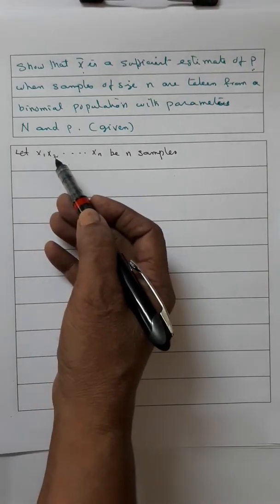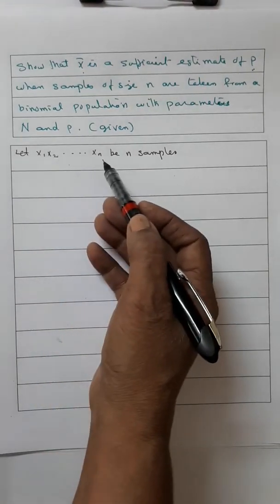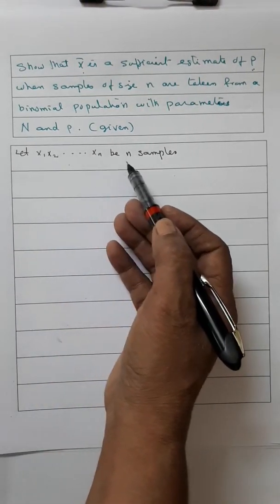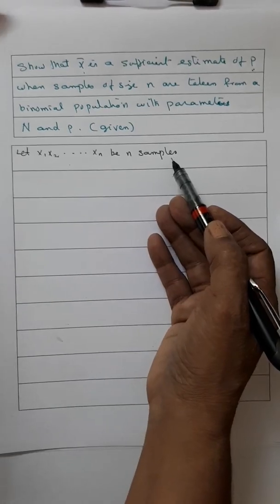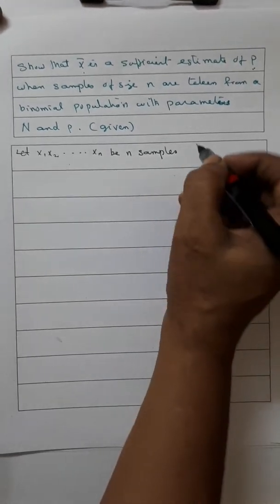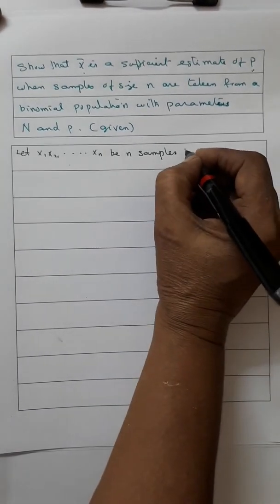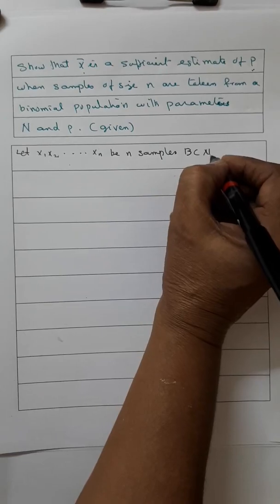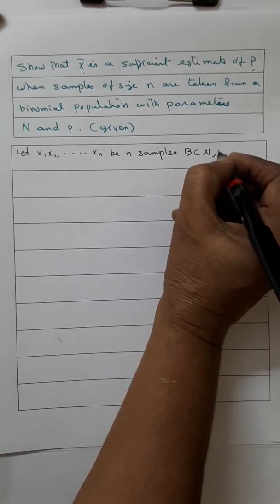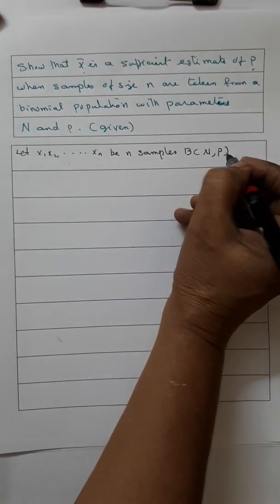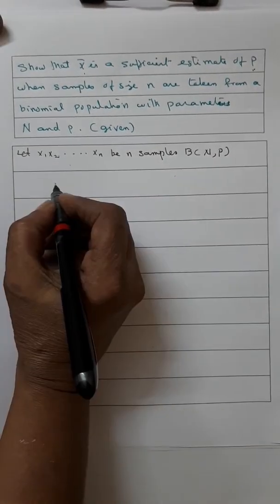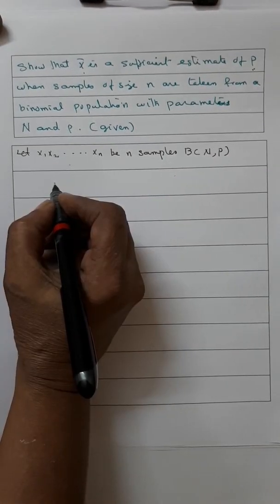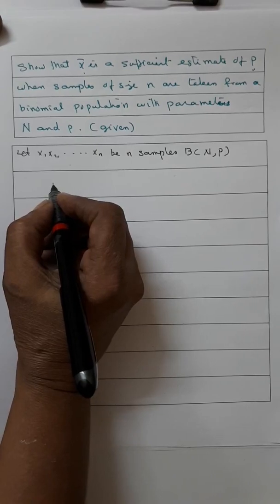Let x1, x2, ..., xn be n samples taken from a binomial population with parameters n and p. So, we have to calculate the likelihood function L(x1, x2, ..., xn; n, p).